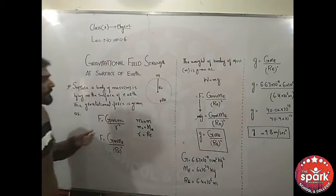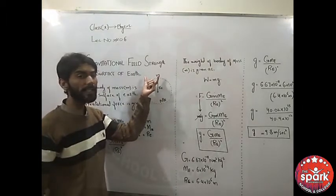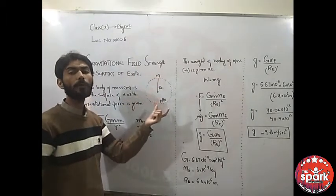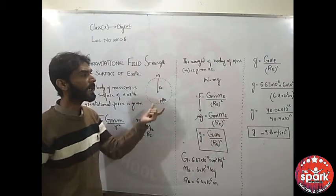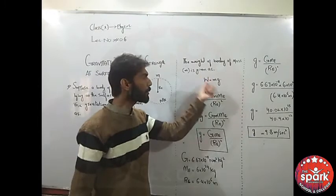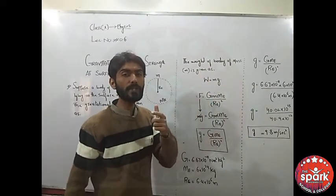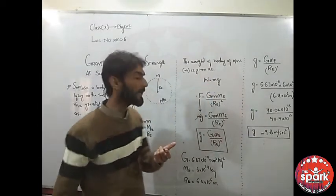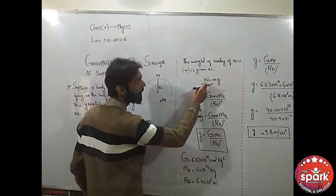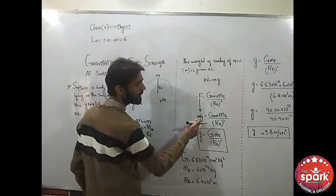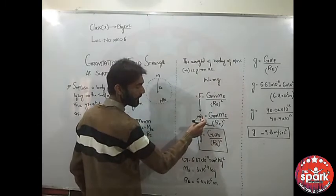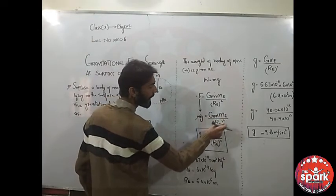Since the body is on the surface of Earth, it has weight. The formula for weight is w = mg. Because weight is a force, we can replace the force with weight: w = G*M*Me/Re².